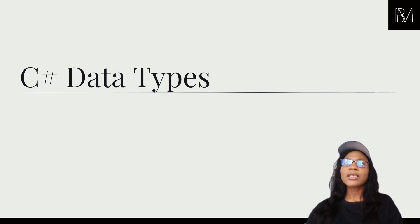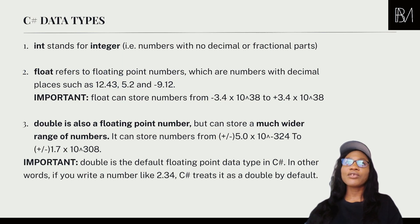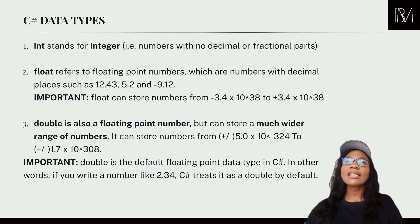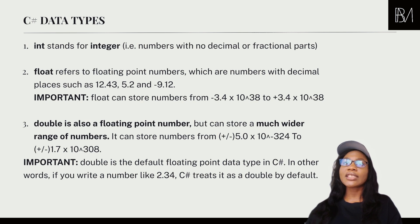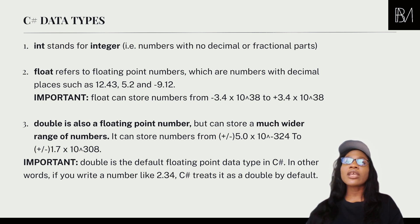Now that we know variables store data types, what are these data types? It's important to know C# data types because they form the building blocks of all the coding we're going to be doing. The int stands for integer and is for numbers that have no decimal or fractional parts. The float is a floating point number — a decimal — and there are three data types that can take decimals depending on the kind of program you're trying to create and the kind of values it may generate.